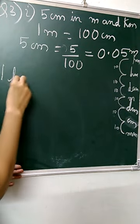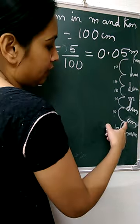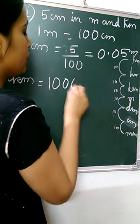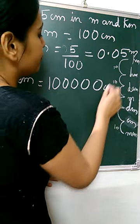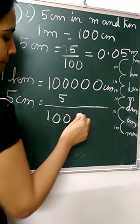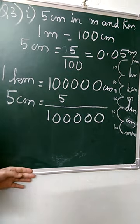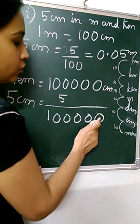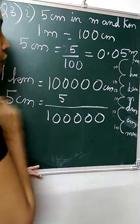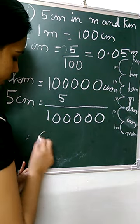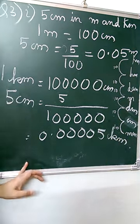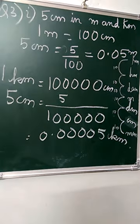Now we have to convert 5 cm into kilometers. 1 kilometer is equal to how many centimeters? From centimeter, we go 1, 2, 3, 4, 5 steps — so 5 zeros, which is 1 lakh. Here also we divide, so 5 will be divided by 1 lakh. We need 5 decimal places, but we have only one digit, so we apply 4 more zeros. It will be 0.00005 kilometers. This completes the first part of question number 3.